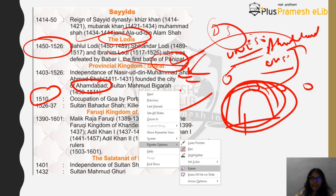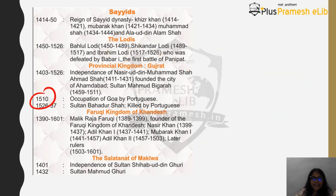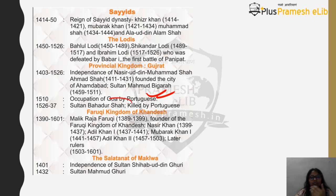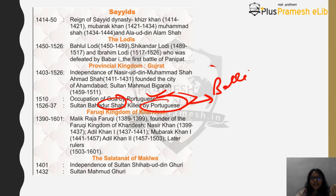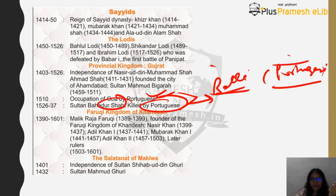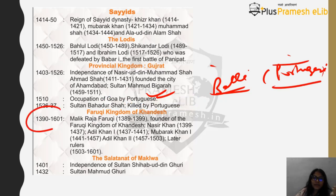In 1510 there was occupation of Goa by the Portuguese, and in 1526 to 1537 Sultan Bahadur Shah was killed by the Portuguese. Although there was already a European entry by now, we don't call this the modern era — it is included within medieval Indian history. This is a common point of confusion that needed clarification.